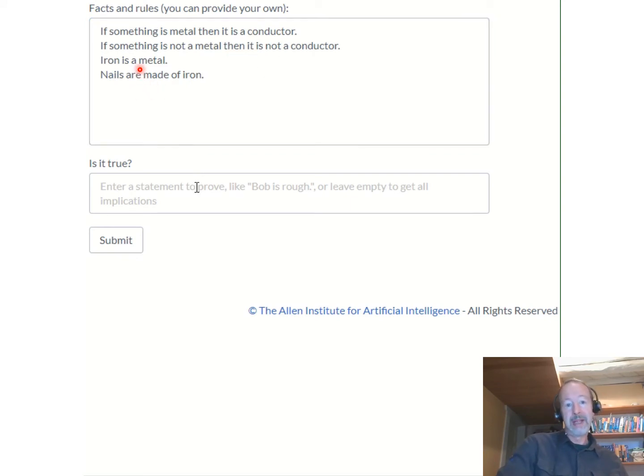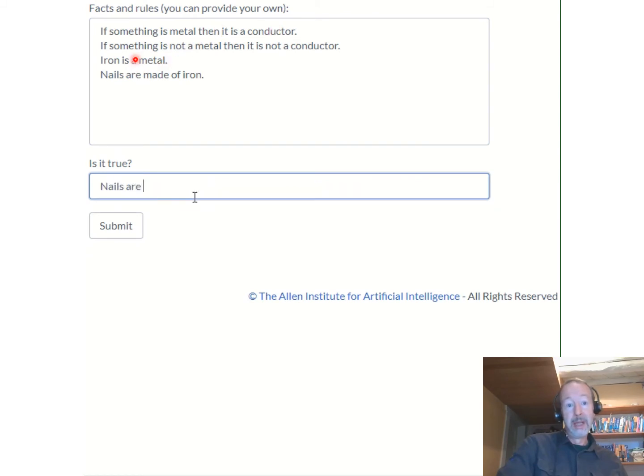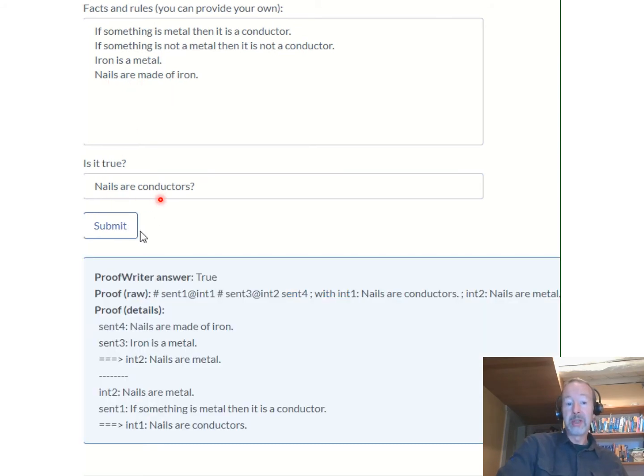First, I'll enter some facts and rules. If something is a metal, then it's a conductor. If something is not a metal, then it's not a conductor. Iron is a metal, nails are made of iron. Now let's ask, are nails conductors?